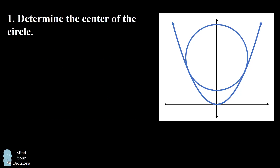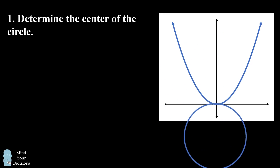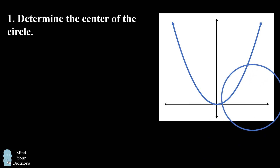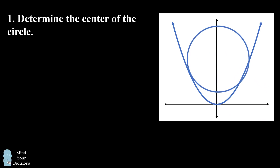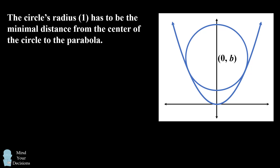So let's proceed by finding the center of the circle. You can experiment with where the circle could be, and you'll come to the conclusion the circle has to be in a particular position. To be tangent at two points, the circle has to be above the parabola. Its center also has to be on the line x equals zero, which means the center of the circle has to be a point of the form (0, b). So what's the value of b? The circle's radius of one has to be the minimal distance from the center of the circle to the parabola, so we attempt to solve for b using a minimization problem.